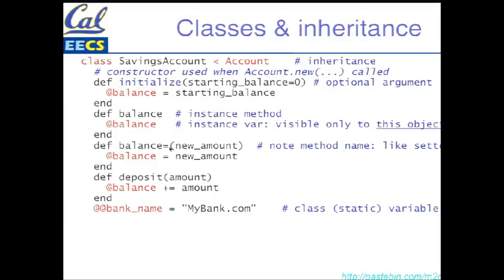And we can define class methods, which Java calls static methods, by proceeding the method definition with self. Now, as an aside, and kind of as a preview, don't worry if this makes your brain hurt a little bit. If it seems arbitrary that class method names begin with self, what's the value of self here?